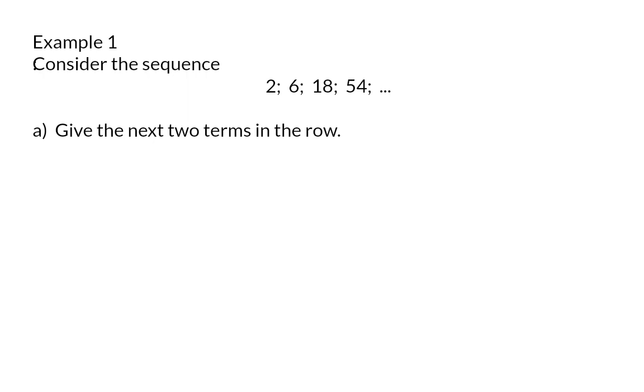In example 1 we still have this same sequence where we've already determined that we multiply by 3 every time, which means the constant ratio is 3. In part A we are asked to give the next two terms in the row, so I'm going to take 54 and times by 3 to get 162, and when I multiply that by 3 I will get 486.